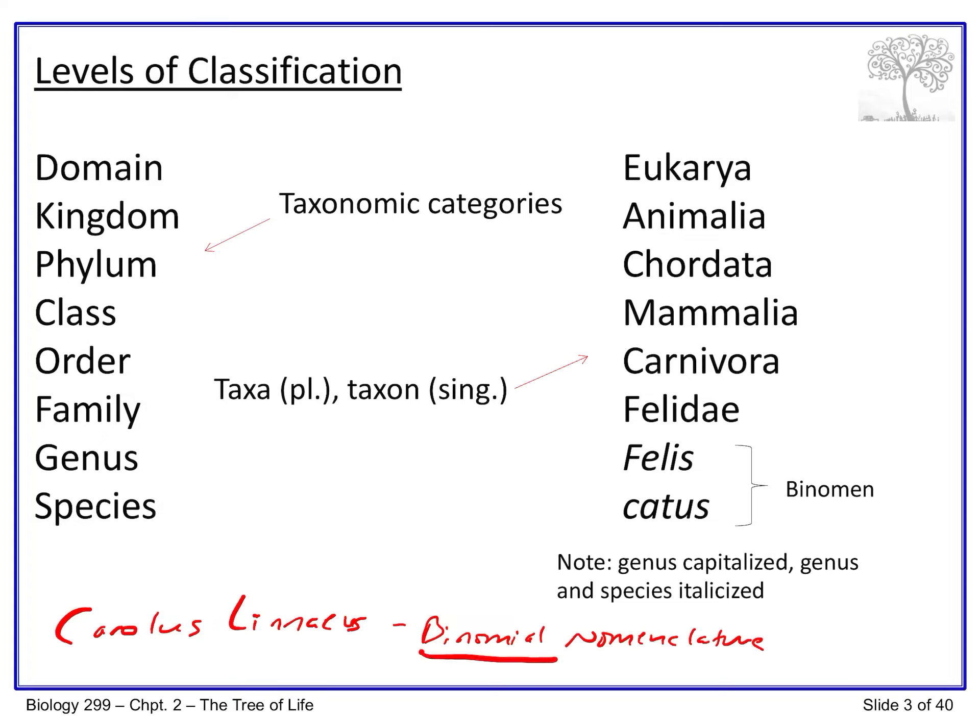Binomial nomenclature is a hierarchical system where groups are nested within larger groups, which themselves are nested within yet larger groups. For example, genera are nested within families, families within orders, orders within classes, classes within phyla, and so on up the line.